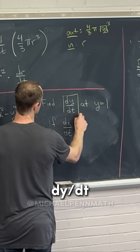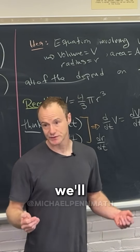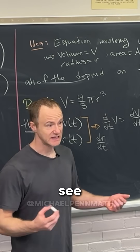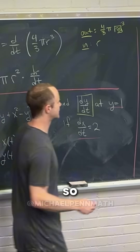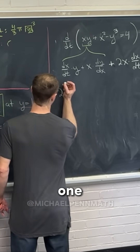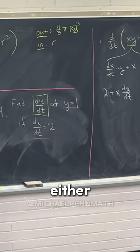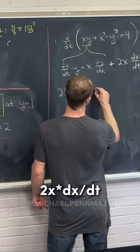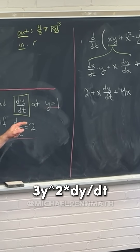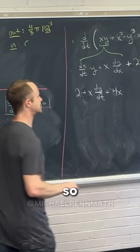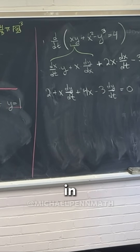We want dy/dt, and we're given y equals 1 and dx/dt equals 2. So everywhere we see y we put 1, and everywhere we see dx/dt we put 2. That gives us 2 times 1 for the first part, plus x times dy/dt, then plus 2x times 2 which is 4x, and then minus 3y squared times dy/dt — but since y equals 1, that becomes minus 3 times dy/dt. And that all equals 0.